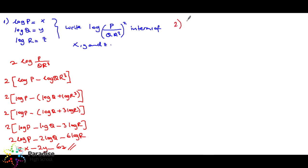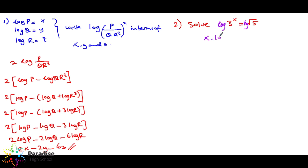Question number two: solve 3 to the power of x equals root five. When the power is unknown, we use logarithm. So in order to find x, I will take logarithm of both sides. The power comes to the front: x times log 3 is equal to log root five.